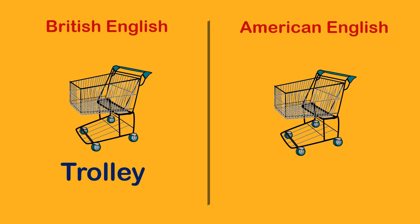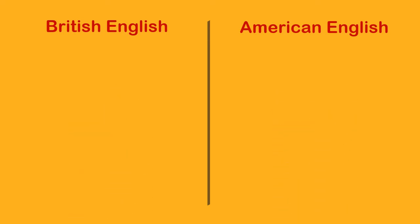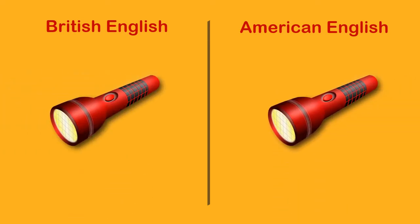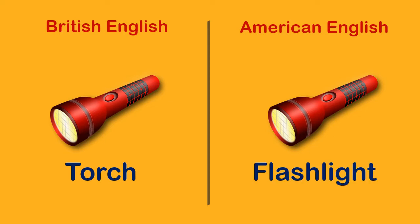The word trolley is used in British English, but Americans use cart. The word torch is used in British English, but Americans use flashlight. Let's see a few more examples of words referred to by different names in British English and American English.